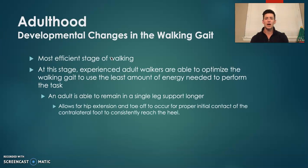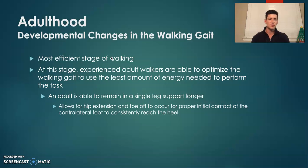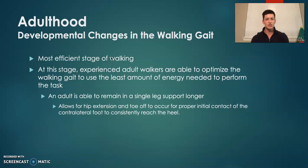Moving on to the development of the walking gait sequence through adulthood. Typically by this time, walkers are much more advanced and experienced. This is definitely the most efficient stage of walking development. At this stage, adult walkers are able to really optimize this gait sequence, which helps to conserve energy when traveling from point A to point B.